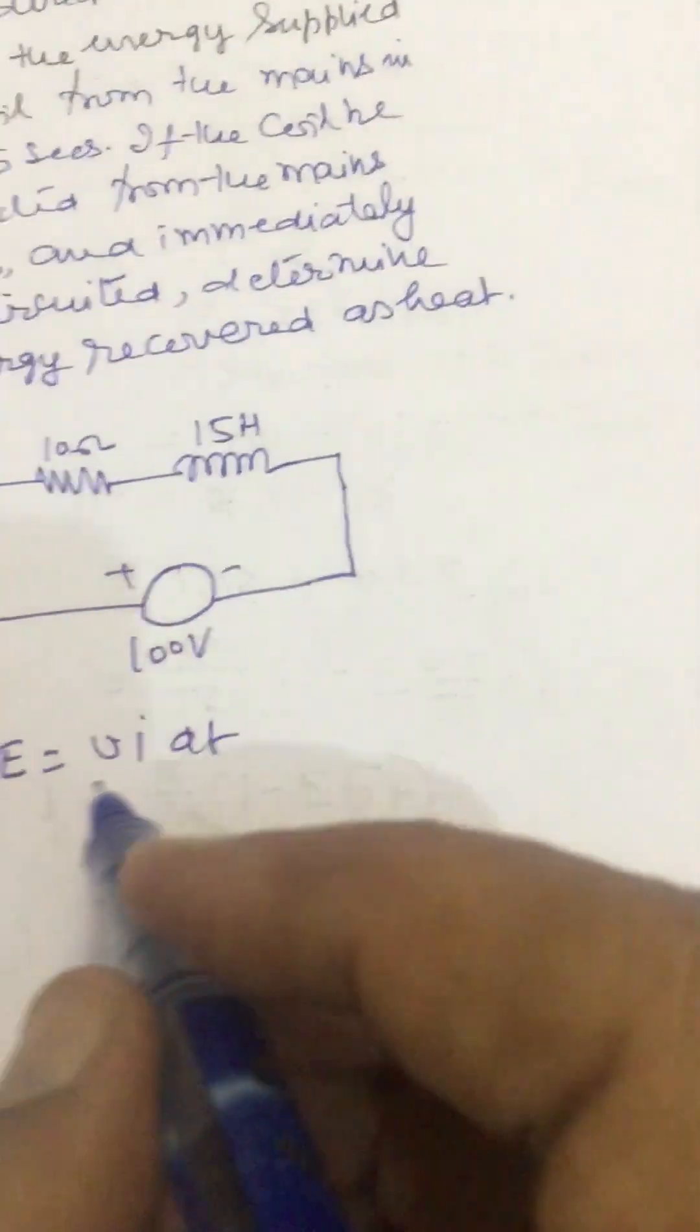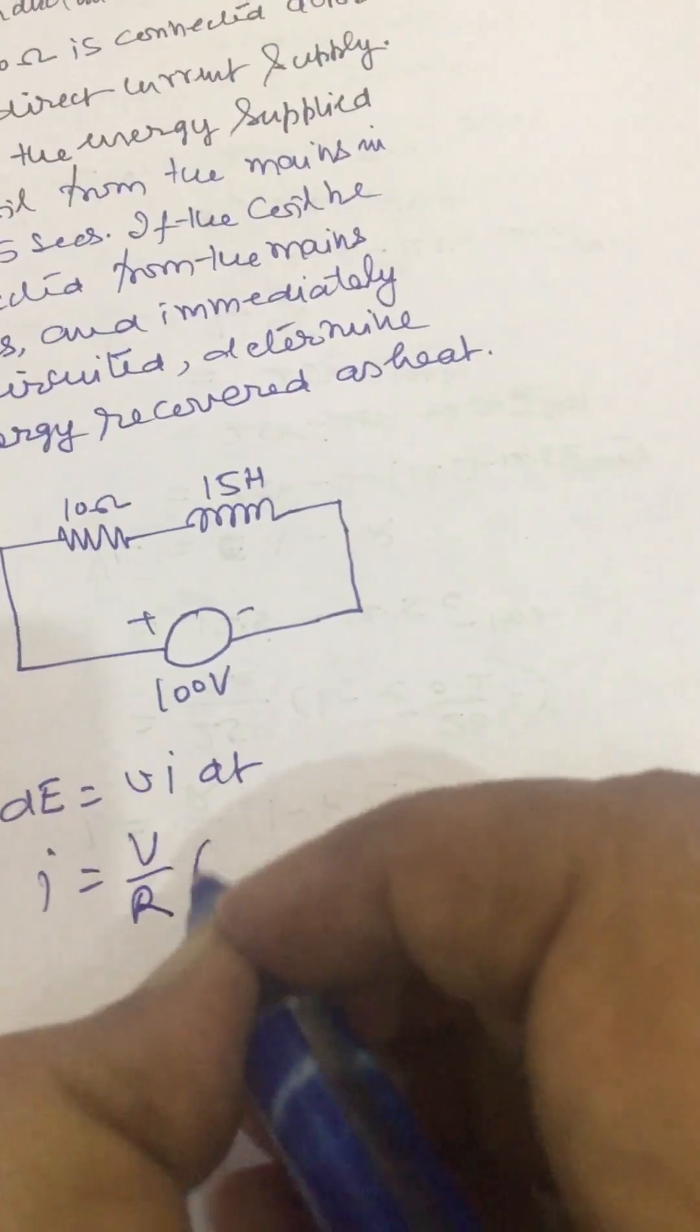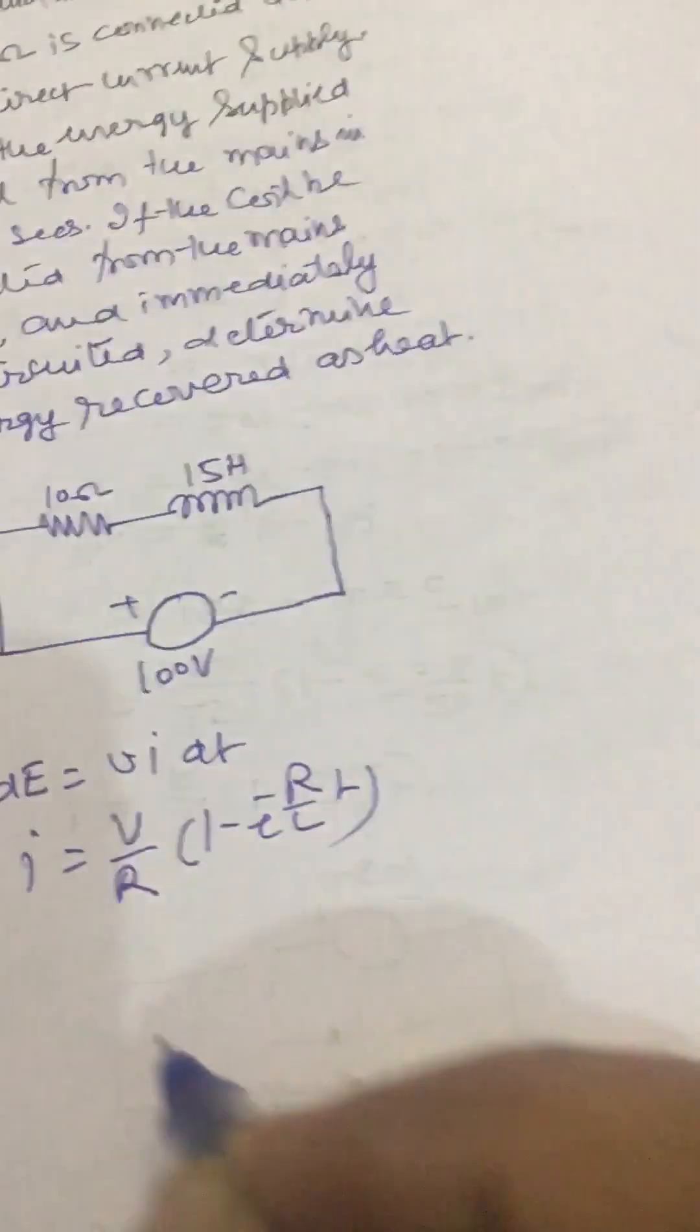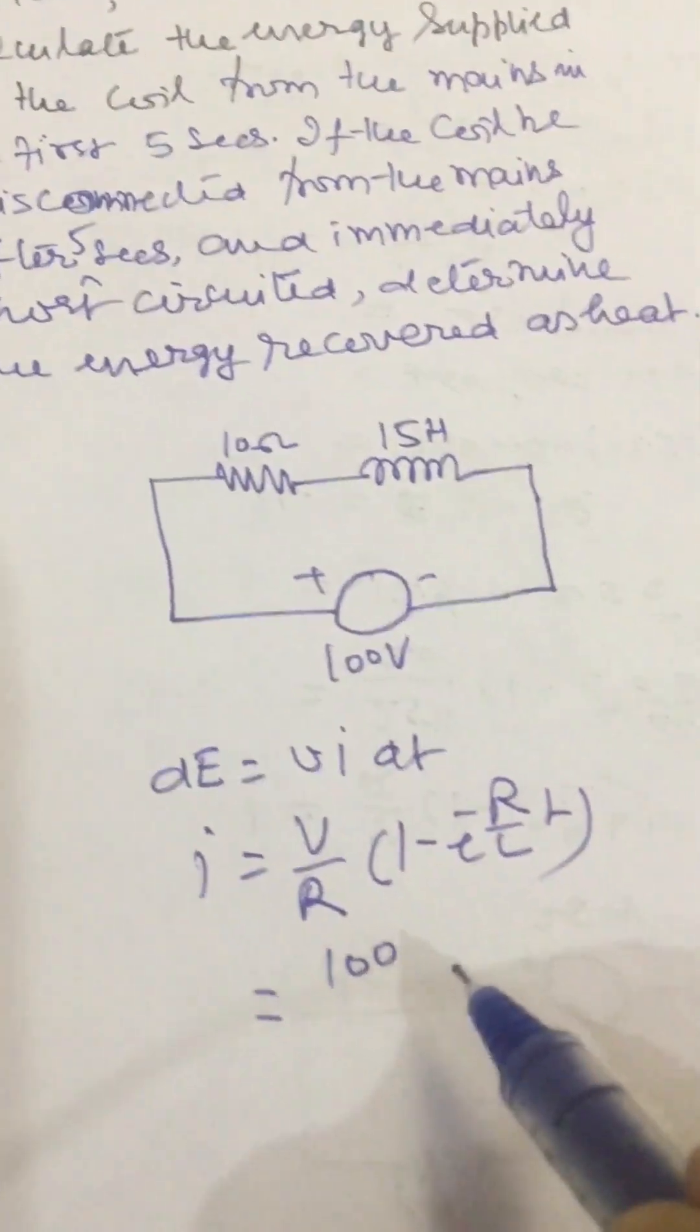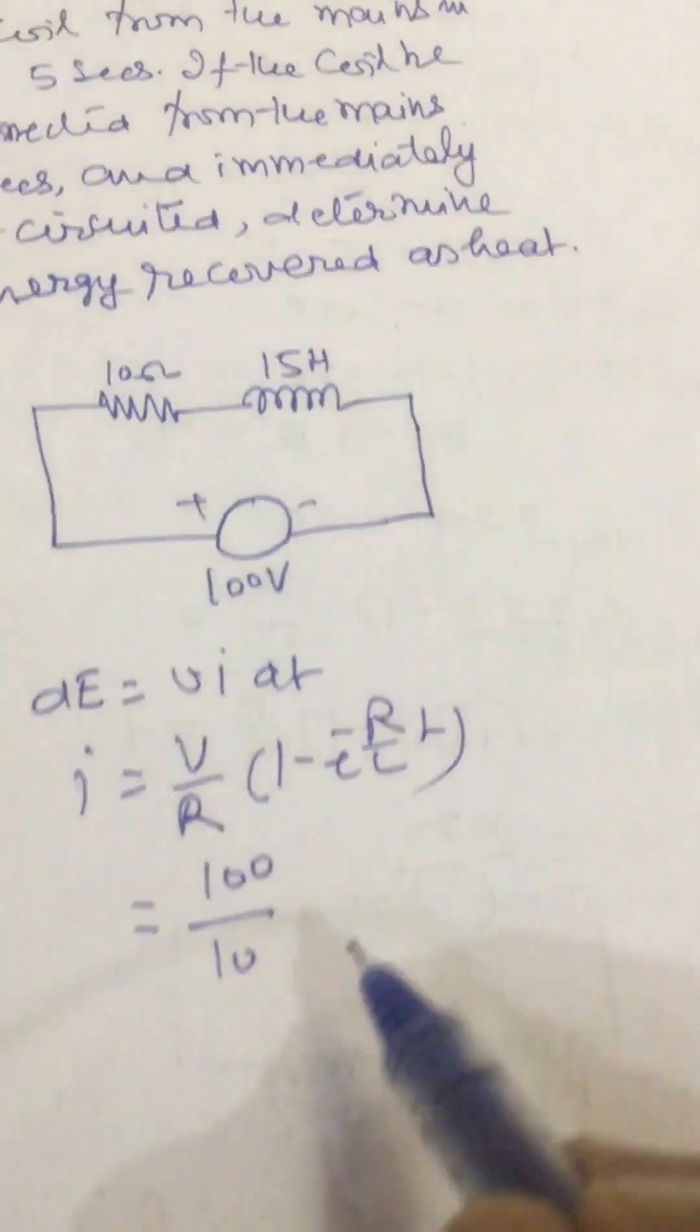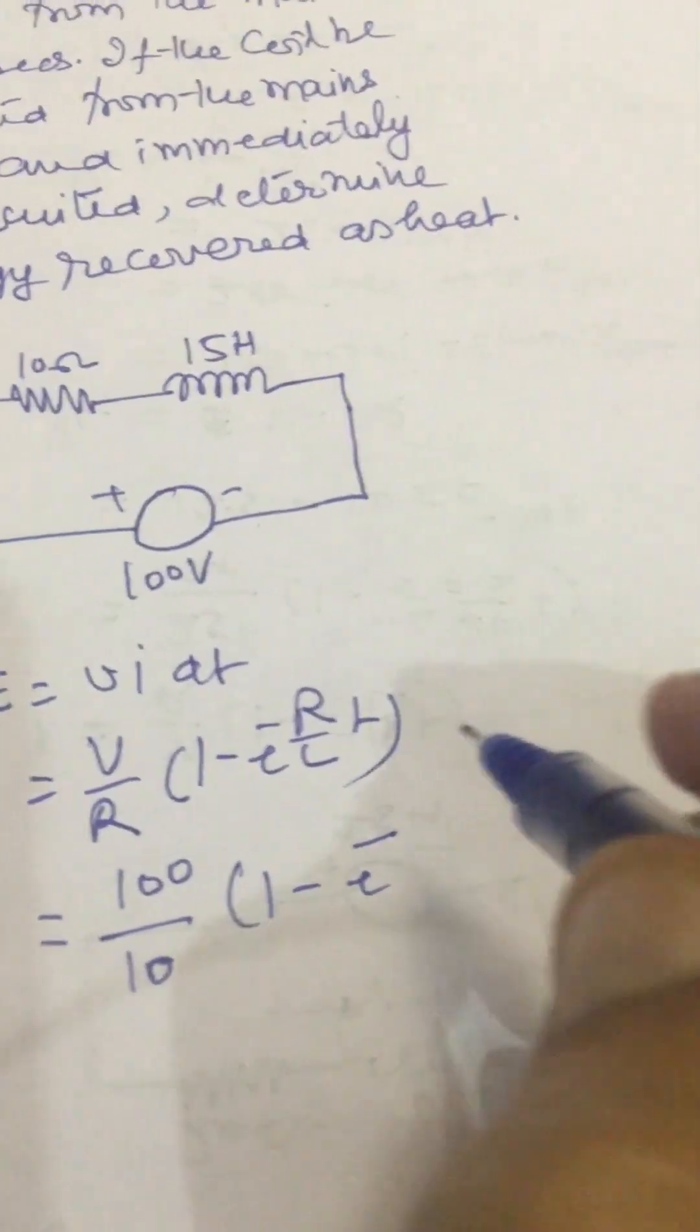This current is given by I equal to V upon R times 1 minus e to power minus Rt/L. Plugging in the given values, we get 100 divided by 10 times 1 minus e to power minus R by L, where R is 10 and L is 15.